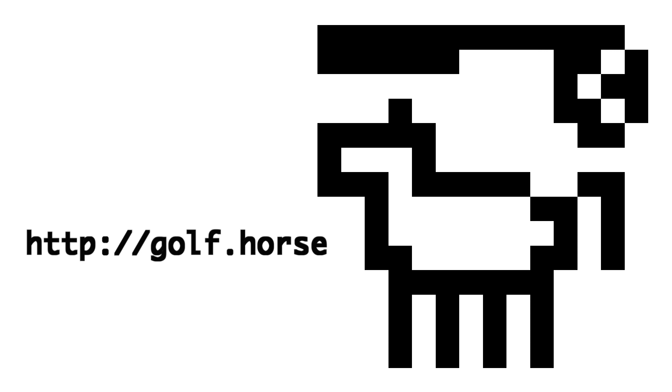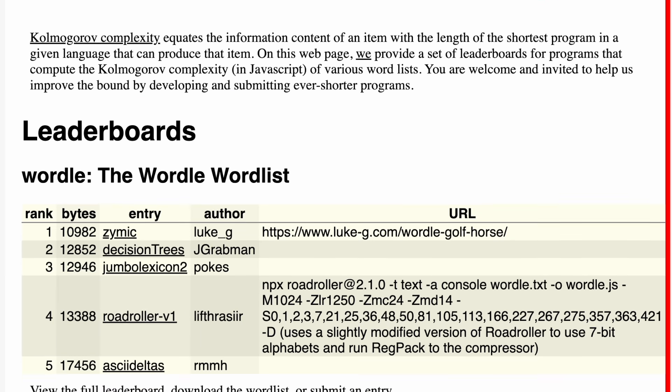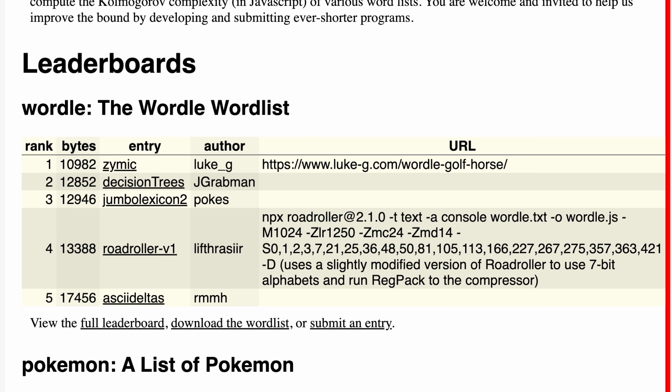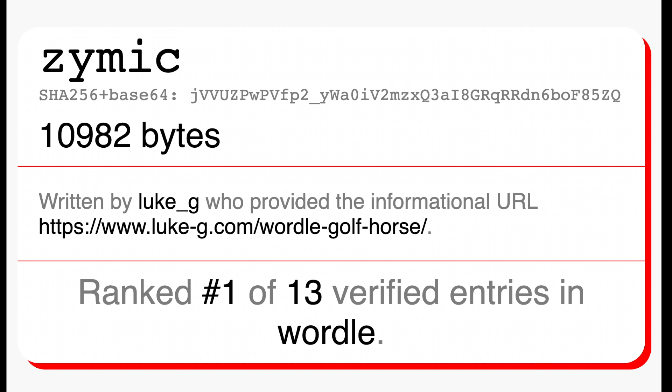Golf.horse is a website where solutions to this challenge can be compared on a public leaderboard. The purpose of this video is to explain some ideas from one particular entry submitted by Jed Grabman called Decision Trees. This entry was ranked number one for two and a half weeks during July 2023, before being surpassed by Luke G's Zymic, which has its own separate write-up.